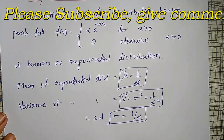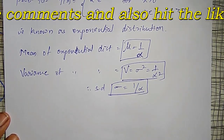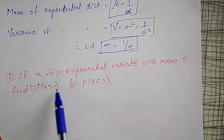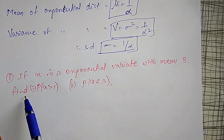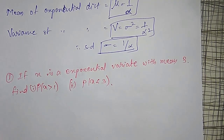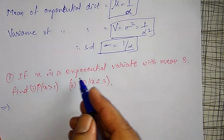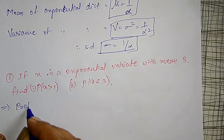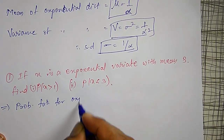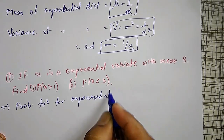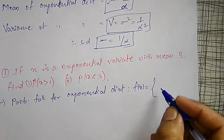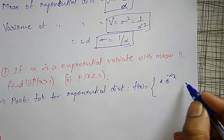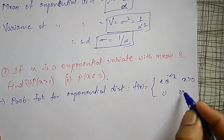Using these, I can solve examples on exponential distribution one by one. If x is an exponential variate with mean equal to 3, we have to find the probability of x > 1 and probability of x < 3. The probability density function for exponential distribution is f(x) = α · e^(−αx) for x > 0, and 0 otherwise.